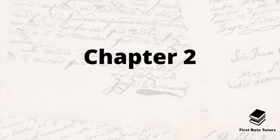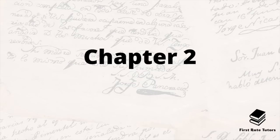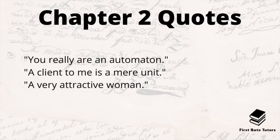Chapter two, The Statement of the Case, introduces the mysterious lady as Miss Mary Morstan, a 26-year-old governess who explains the baffling case of her father — an officer in an Indian regiment. Ten years ago, when she was 17, he returned to England and disappeared before they could be reunited at the Langham Hotel. After answering an advertisement she had for six years received a box containing a single rare pearl, and that morning received a letter saying she was a wronged woman, asking her to come to the Lyceum Theatre with two friends. Holmes and Watson agree to accompany her. Key quotes: 'You really are an automaton'; 'A client to me is a mere unit'; and a description of Mary Morstan as 'a very attractive woman.'